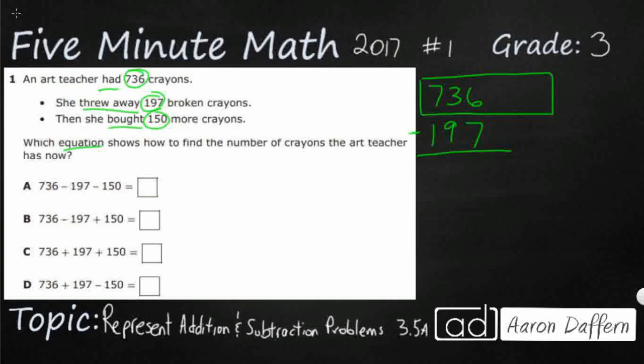So let's go ahead and just do that real quick. We're going to have to regroup twice. We don't necessarily have to, as you can see, we're not looking for the actual answer, but it'd be good just to know. So 16 minus 7 is 9, 2 minus 9 can't do that, we need to regroup. So let's do 12 minus 9 is 3. So she's got 539 left after throwing away that 197.